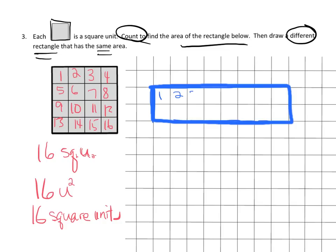So we could call this one 1, 2, 3, 4, 5, 6, 7, 8, 9, 10, 11, 12, 13, 14, 15, 16. So sure enough, that has an area of 16 square units.